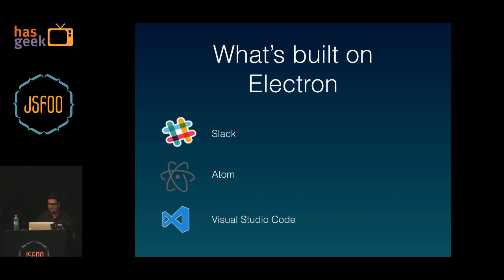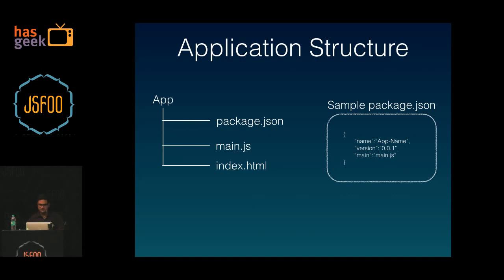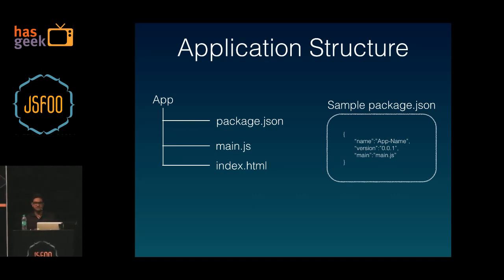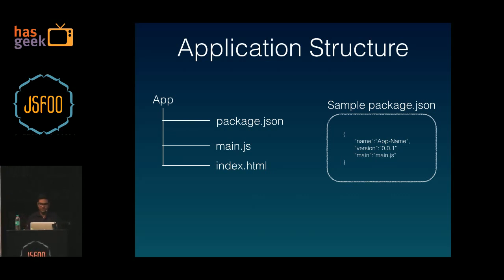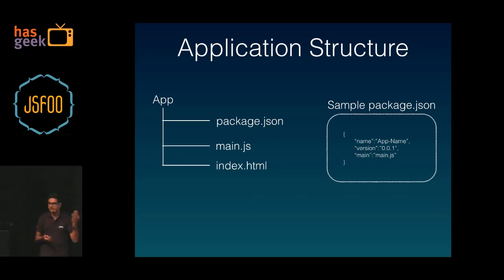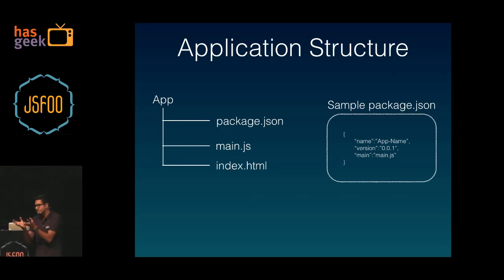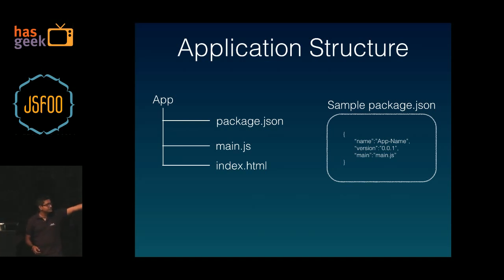Let's look a little deeper into Electron's app structure. Electron is quite fun to work with because as a web developer you don't need to learn anything new. It uses the same old package.json — in your package.json you just provide your app name, the version, and your main.js. Your main.js is the first JavaScript file that Electron is going to load. This is your app folder: you have the package.json, your main.js, and your index.html — the HTML file that your application loads.